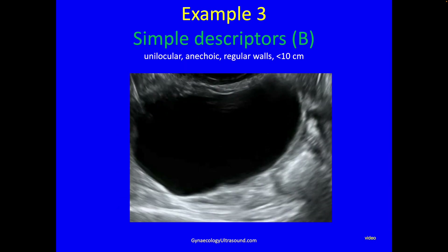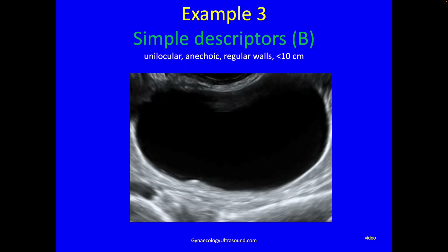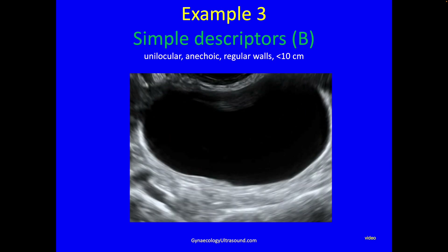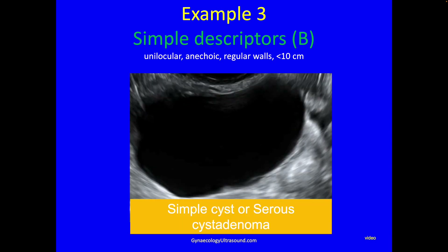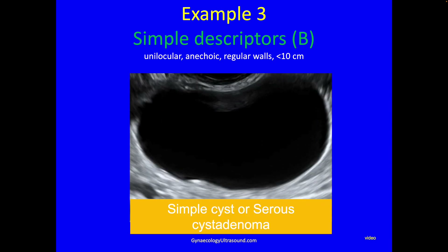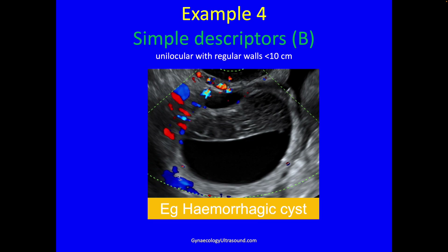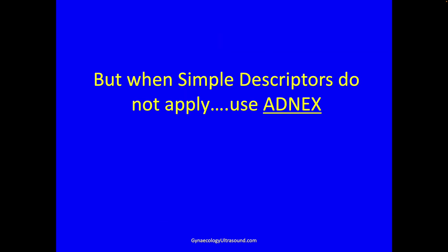Another simple descriptor is a unilocular cyst, no solid component, regular walls, anechoic cyst contents, less than 10 centimeters — this is a simple cyst or a serous cyst adenoma. The last simple descriptor is a unilocular cyst with regular walls, no solid component, less than 10 centimeters — this includes hemorrhagic cysts. So half of the masses can be recognized using benign simple descriptors, but if they don't apply, then use ADNEX.